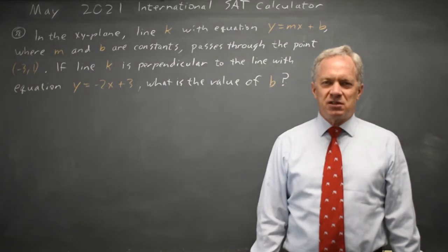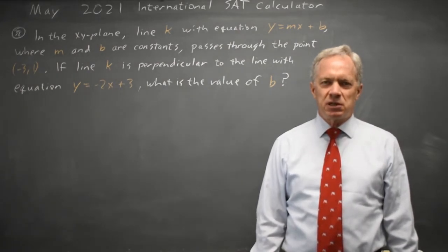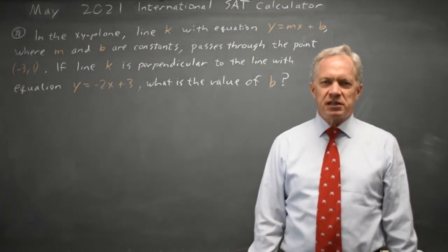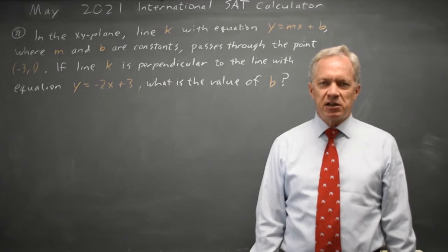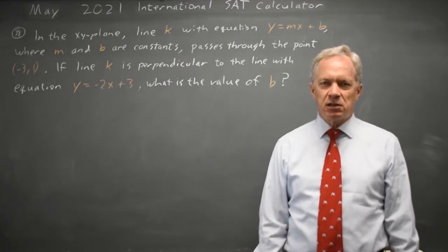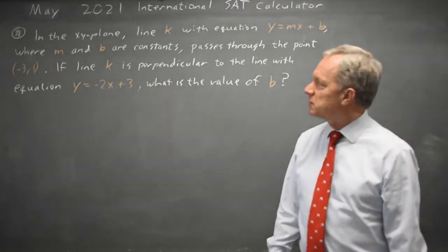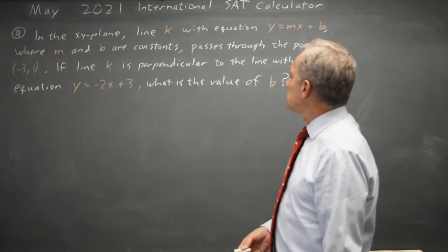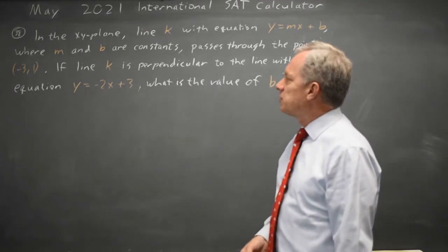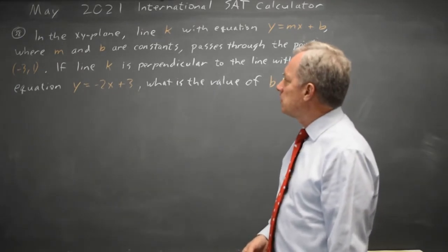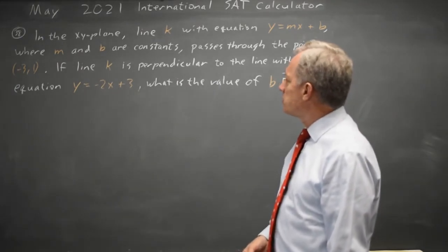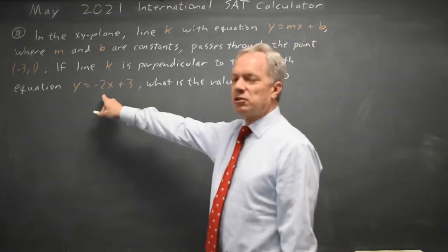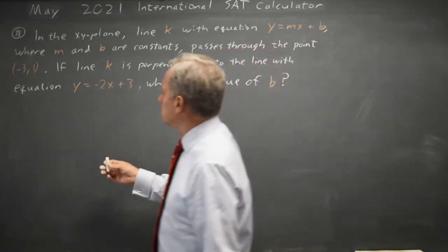I'm Dr. Roger, and this question is from the May 2021 International SAT Calculator section. College Board gives us a line y equals mx plus b that includes the point negative 3, 1, and the line is perpendicular to the line with slope negative 2.